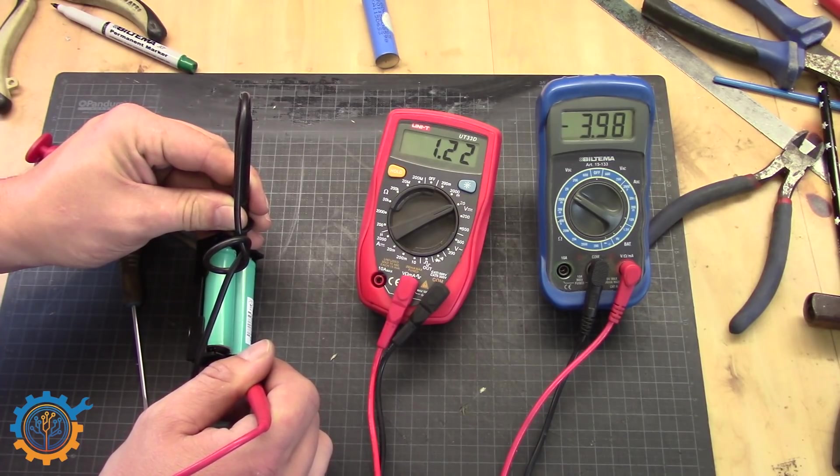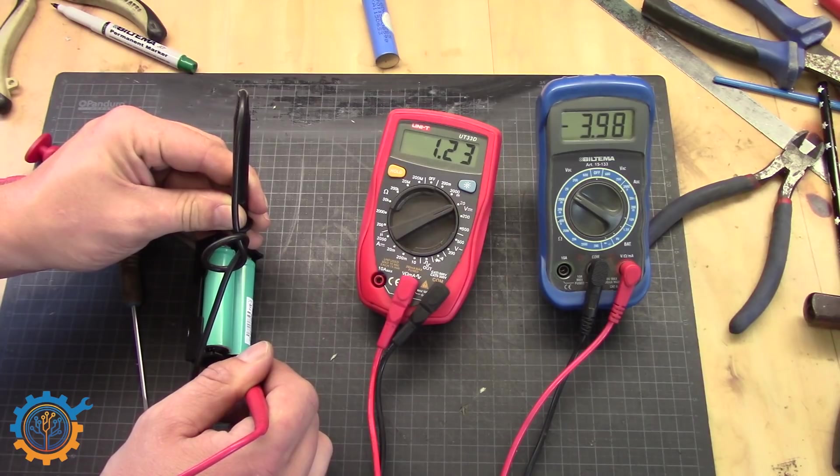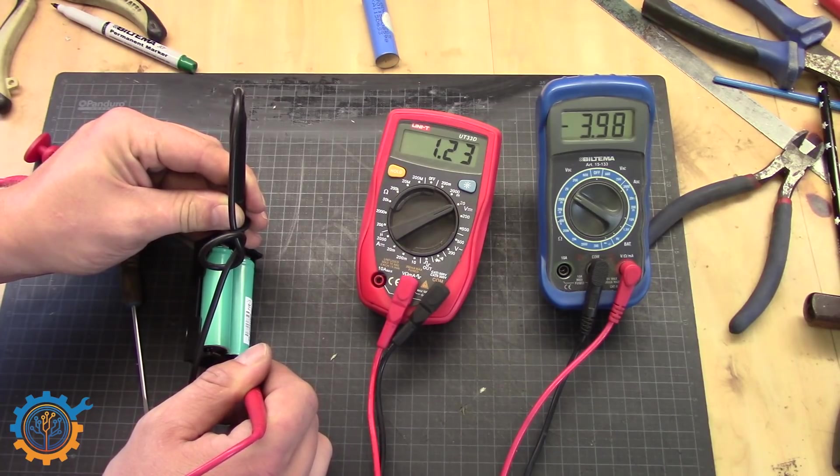So basically what we are doing now. We are charging the low side cell with 50 milliamp at most. Actually it's not 50 milliamp. Because the voltage between them are not 4.2 volt. But it's less than 50 milliamp at least.